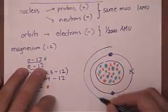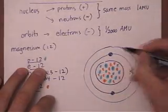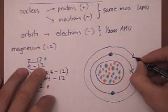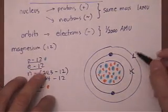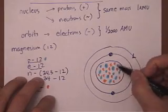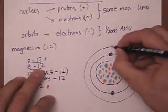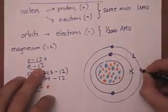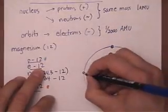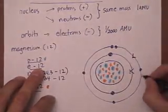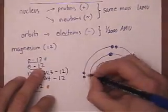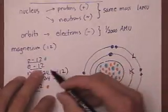Draw my second orbit in. That is my L orbit. My L orbit can have a maximum of 8. Eight plus the 2 I already have is 10. So I can fill in 8 here. 1, 2, 3, 4, 5, 6, 7, 8. That gives me 2 plus 8 is 10.